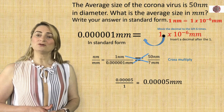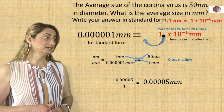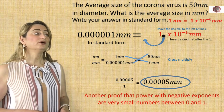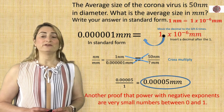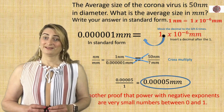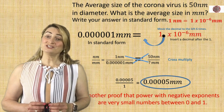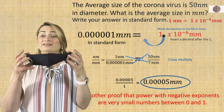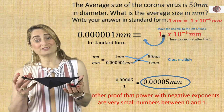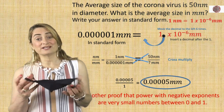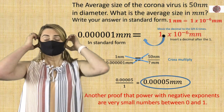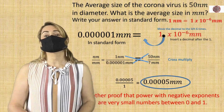That's how small the coronavirus is — another proof that powers with negative exponents are very small numbers between 0 and 1. And that's why we wear masks to protect us from the virus that's in the air around us, so we don't get sick and infected with the coronavirus.